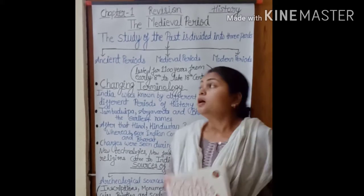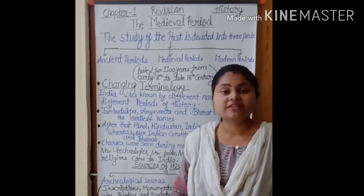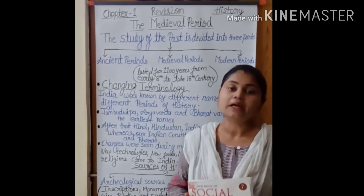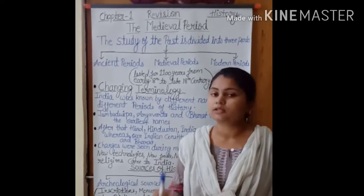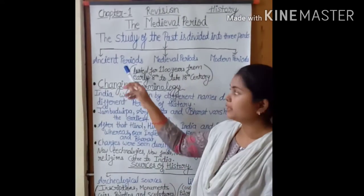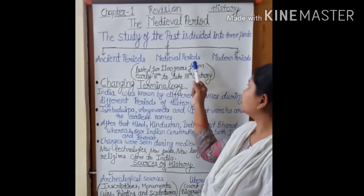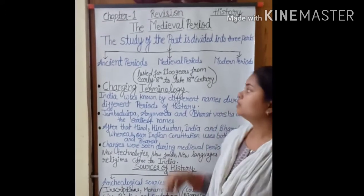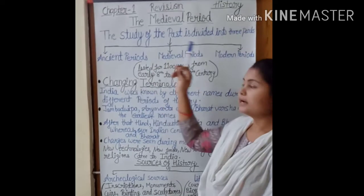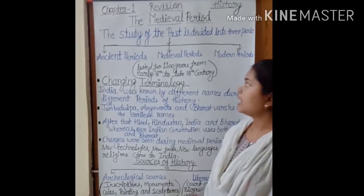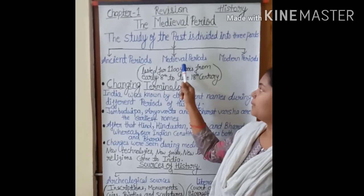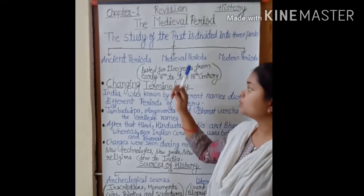The study of past is divided into three parts: the ancient period, the medieval period, and the modern period. The medieval period lies between the ancient period and the modern period, and in this chapter we'll read about the medieval period.